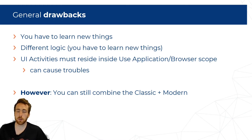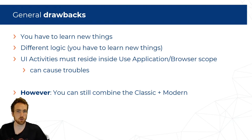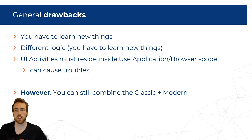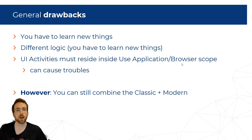Another drawback many people mention is that UI activities — those that interact with the user interface — must reside inside a Use Application or Browser scope. They cannot go standalone. Navigating selectors within these scopes can cause trouble, but once you understand how it works it gets easy. If you're still missing some classic activity, you can always use both classic and modern activities in the same project.